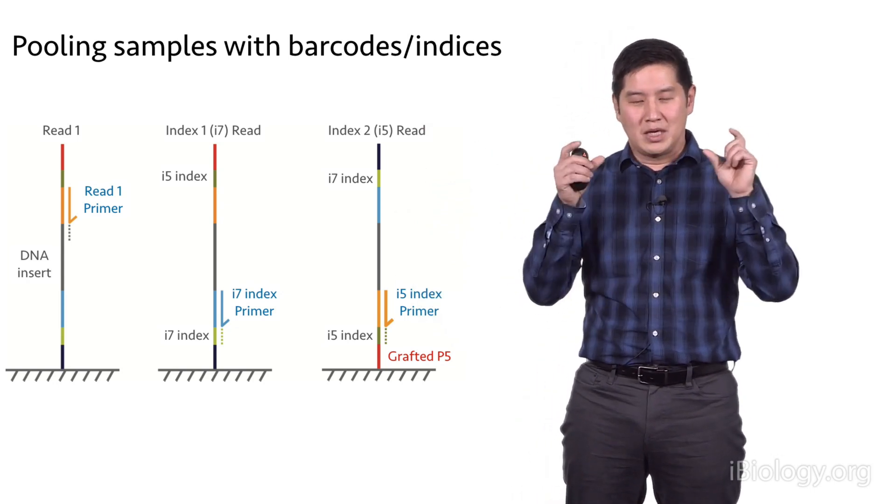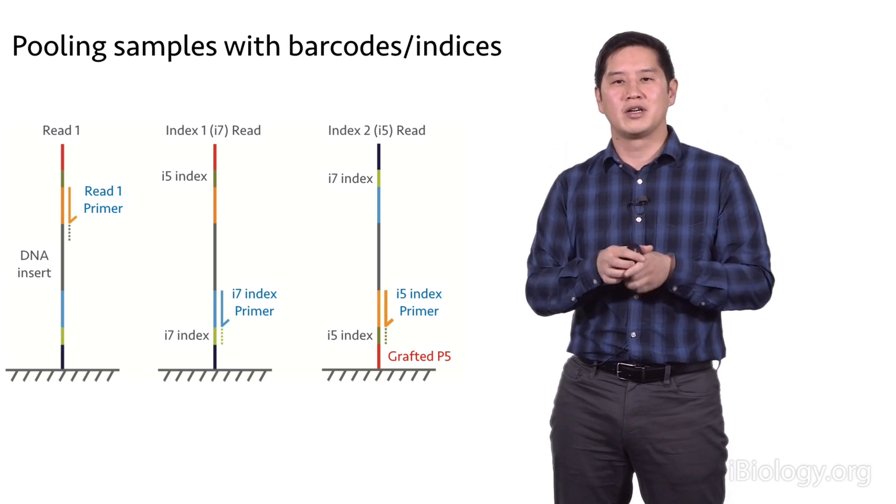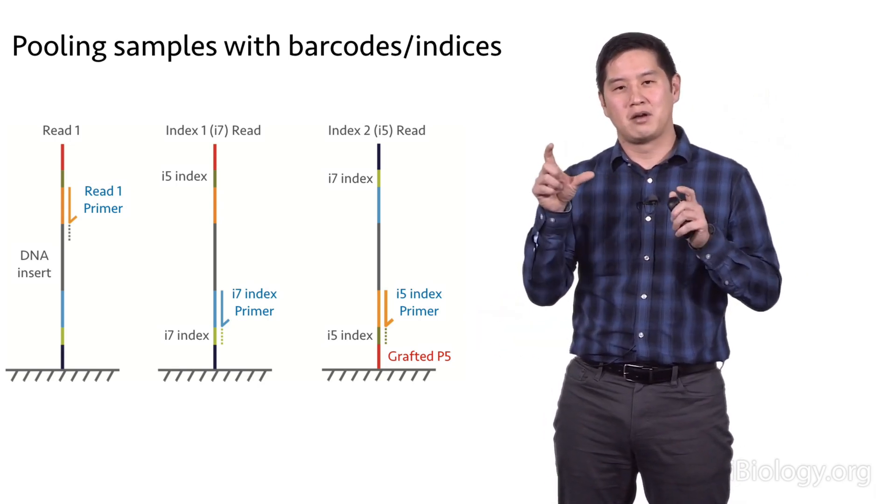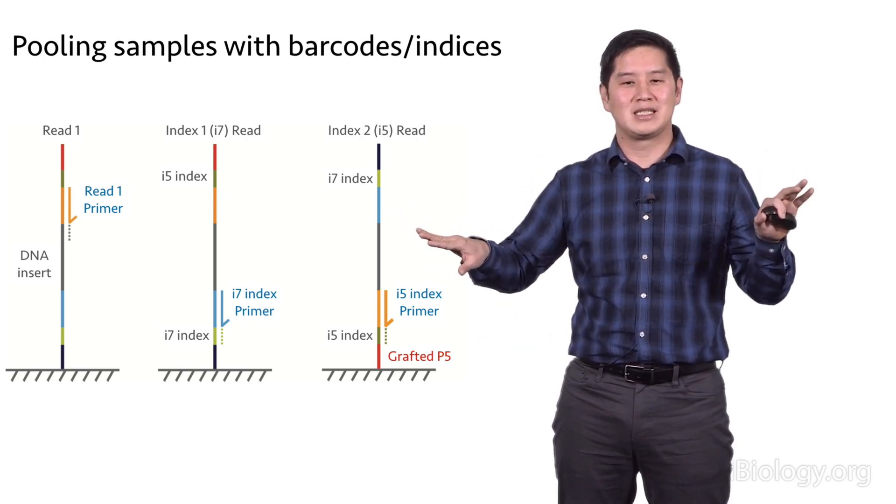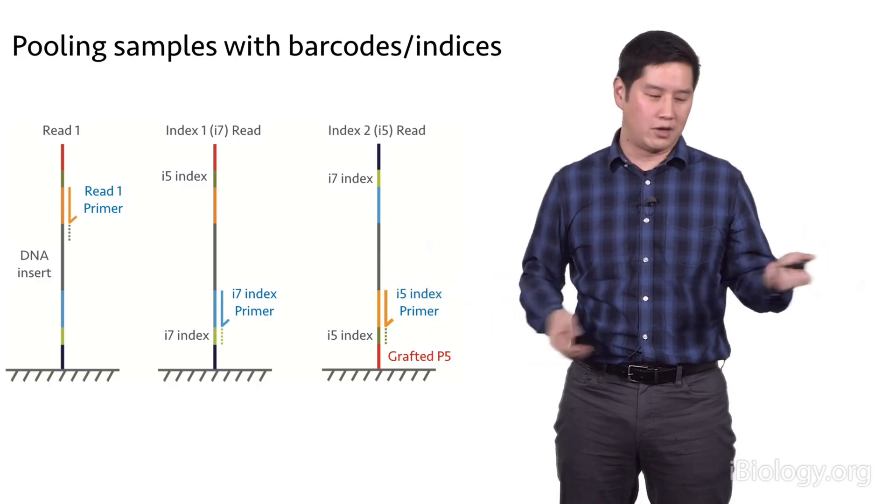you can strip that away and then sequence the other end of your insert. You can link all of these sequences together—your insert reads and your barcode reads—because they're all constrained to the same area of that flow cell. Then you can use those barcode sequences to separate your reads into your different sample pools: healthy, diseased, treated, untreated.